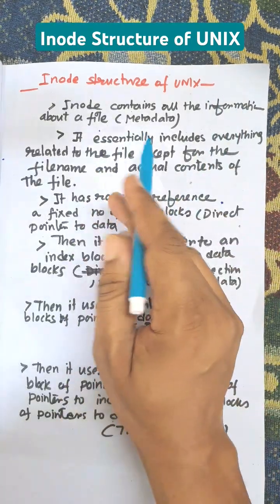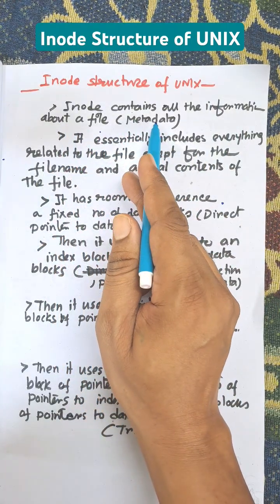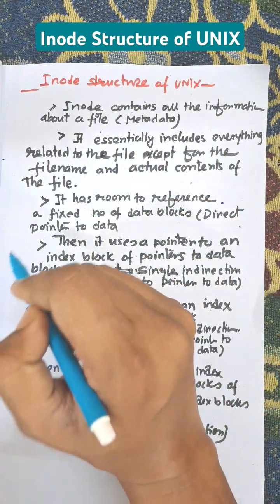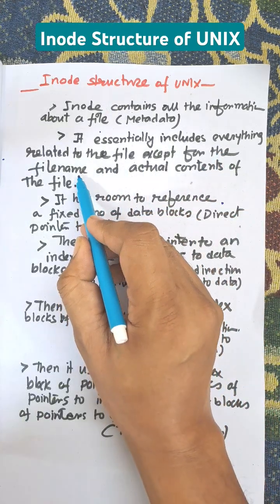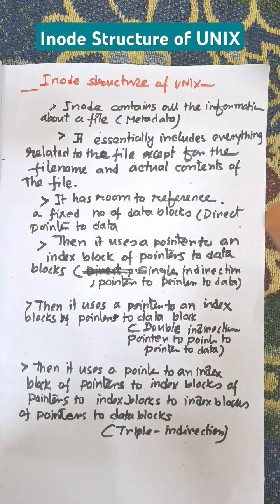Inode contains all information about a file. It is like data about data, that is metadata. It essentially includes everything related to the file except for the file name and actual content of the file.